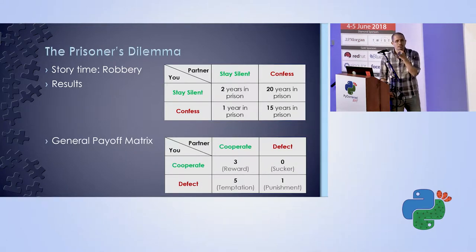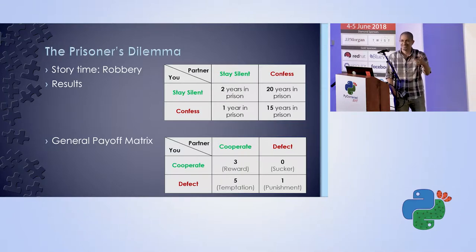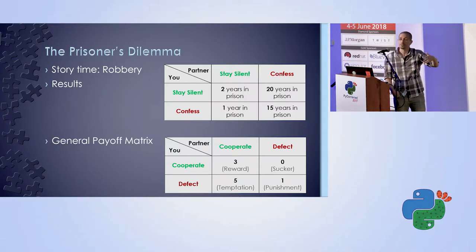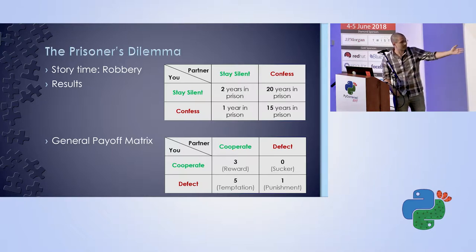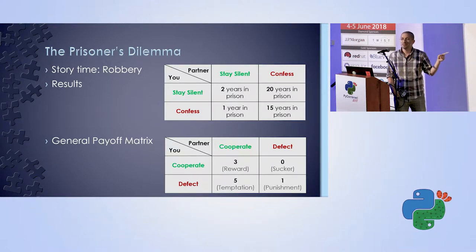We call this the prisoner's dilemma, and we look at it in general terms. You can either cooperate — in this case, staying silent with your partner — or defect, going for your own benefit. The payoffs are: if both cooperate, you get the reward payoff (say 3 points); if both defect, the punishment payoff (1 point); if one defects, they get the temptation payoff and the other gets the sucker payoff.